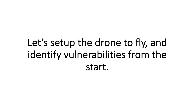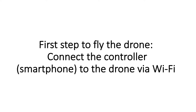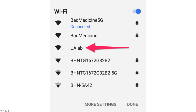Let's set up the drone to fly and from the very start identify vulnerabilities. I've installed the smartphone app on my phone. In order to fly the drone, we need to connect the controller—the smartphone—to the drone via Wi-Fi. Here we're showing that the ESSID, or essentially the access point name, is UALab. We're going to select that so we can connect our smartphone to the drone.